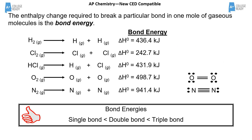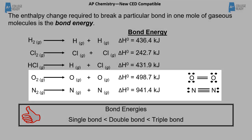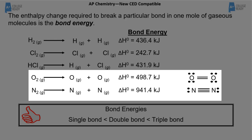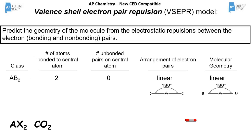Bond energy is the energy required to break a bond, or the energy released as a bond forms. This will be important in thermochemistry and calculating changes in enthalpy. The key takeaway is that students should be able to gauge which bond has higher energy and why. Triple bonds are the shortest and have the greatest bond energy; single bonds are longest with the lowest bond energy.